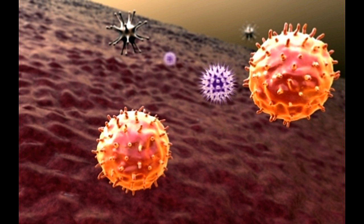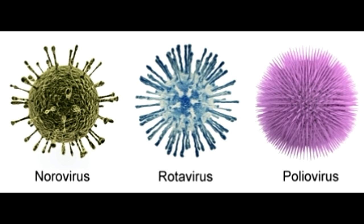Apart from the dissimilarities in their structure, viruses in both groups exhibit different characteristics too. Non-enveloped viruses are surrounded by a protein coating, commonly referred to as a capsid. The capsid does the job of attaching to host cells.